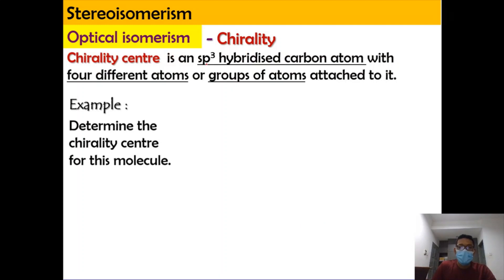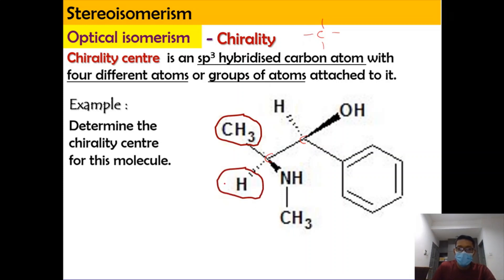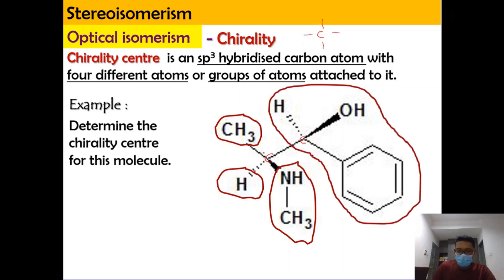The chirality center is an sp3 hybridized carbon atom with four different groups of atoms attached to it. For the example molecule, we find the carbon atoms one by one. The carbon here is attached with the methyl group, hydrogen, and NHCH3 — and this carbon is attached to four different groups, so it is a chiral carbon.